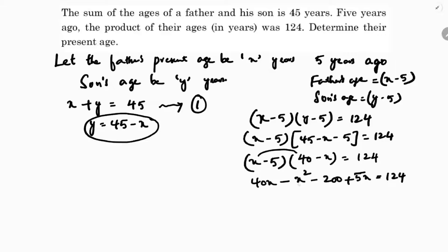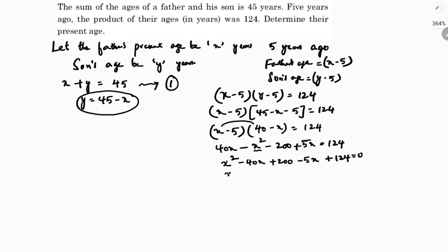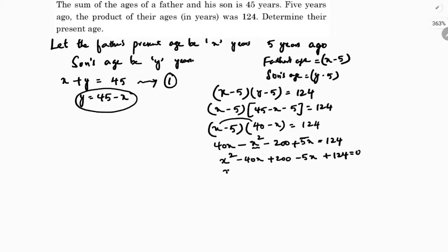Since x squared is negative, we move all terms to the right side. So x squared minus 40x minus 200 plus 200, plus 5x becomes minus 5x, and 124 is already on the right side, giving us zero. Simplifying: x squared minus 45x plus 324 equals zero.